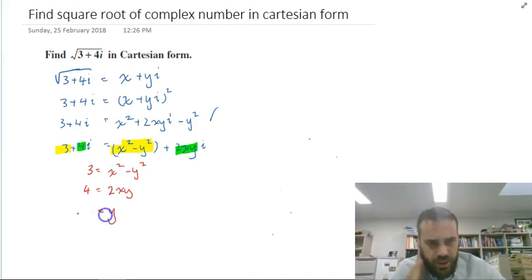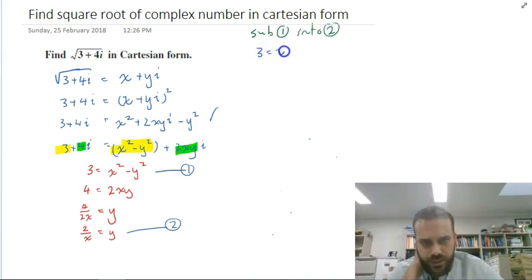So, I can say that y equals 4 on 2x which is just going to become y equals 2 on x. So, I have an equation 1, 3 equals x squared minus y squared and I have an equation 2, y equals 2 on x. I'm going to sub equation 2 into equation 1. So, now I'm going to get 3 equals x squared minus 2 on x all squared.